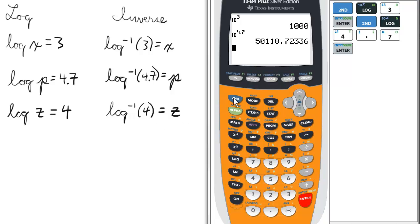We repeat the process, pressing 2nd and log to access the inverse log function, and enter 4, and then z equals 10,000. Now, let's look back to it.